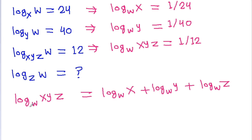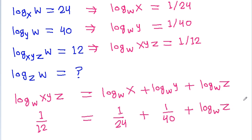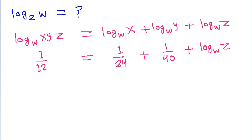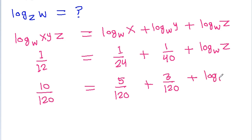So log base w of xyg equals log base w of x plus log base w of y plus log base w of g, and 1 by 12 equals log base w of x is 1 by 24, plus log base w of y is 1 by 40, plus log base w of g. Converting to 120ths: 10 by 120 equals 5 by 120 plus 3 by 120 plus log base w of g. So 10 minus 5 minus 3 is 2 by 120, which equals log base w of g.